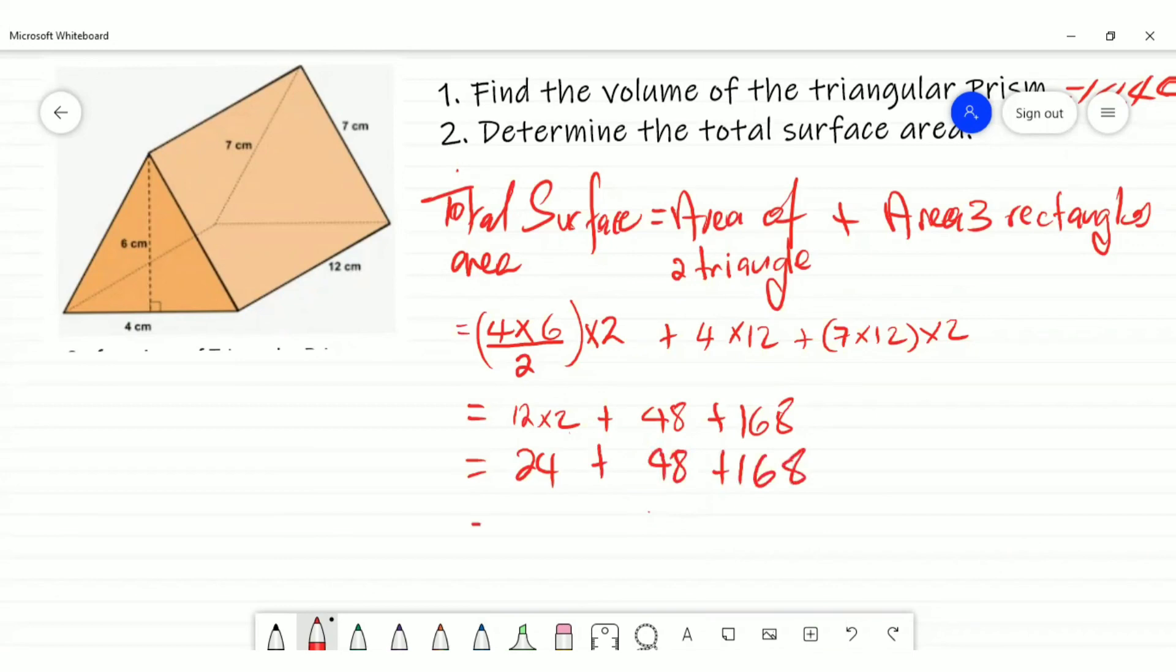That equals 240, so the total surface area will be 240 square centimeters. So that's basically total surface area by looking at all the shapes that we have and finding the areas of all the plane shapes that make up that figure. Thank you for watching. Please like, subscribe, and leave a comment. Delima's Concepts, see you next time, bye.